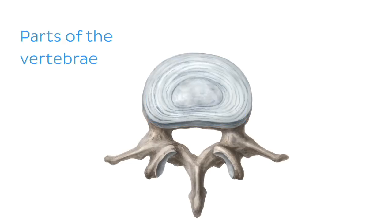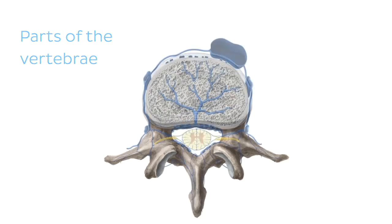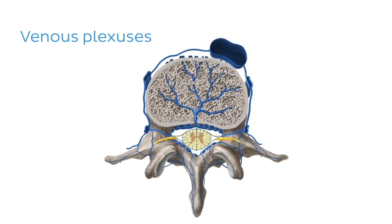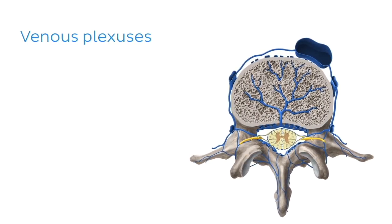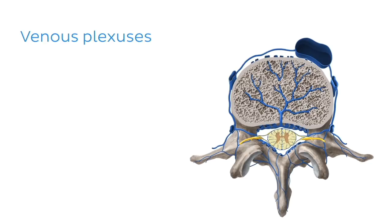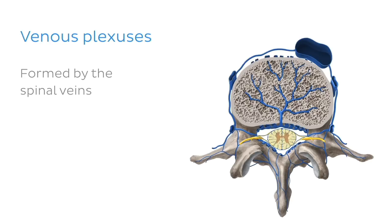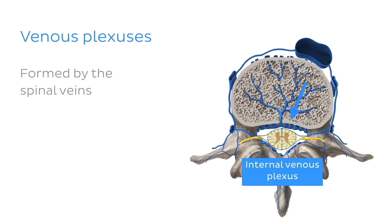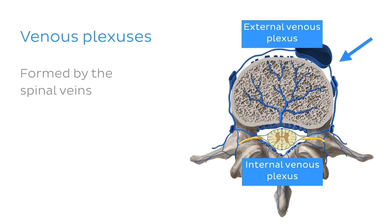Now that we've gone over the key anatomy features of the vertebra, let's start looking at the venous drainage of the vertebral column. The vertebral column is drained by venous plexuses, otherwise known as a network of veins. These venous plexuses are formed by the spinal veins along the vertebral column both inside and outside the vertebral canal, and are appropriately named the internal and external vertebral venous plexuses.